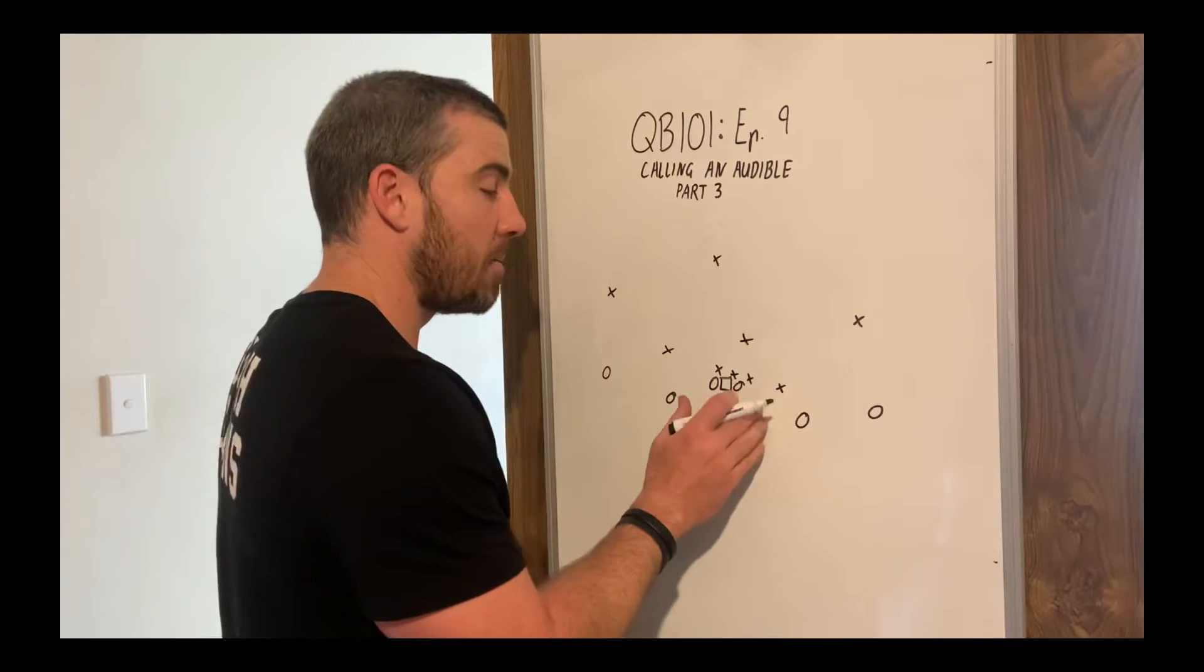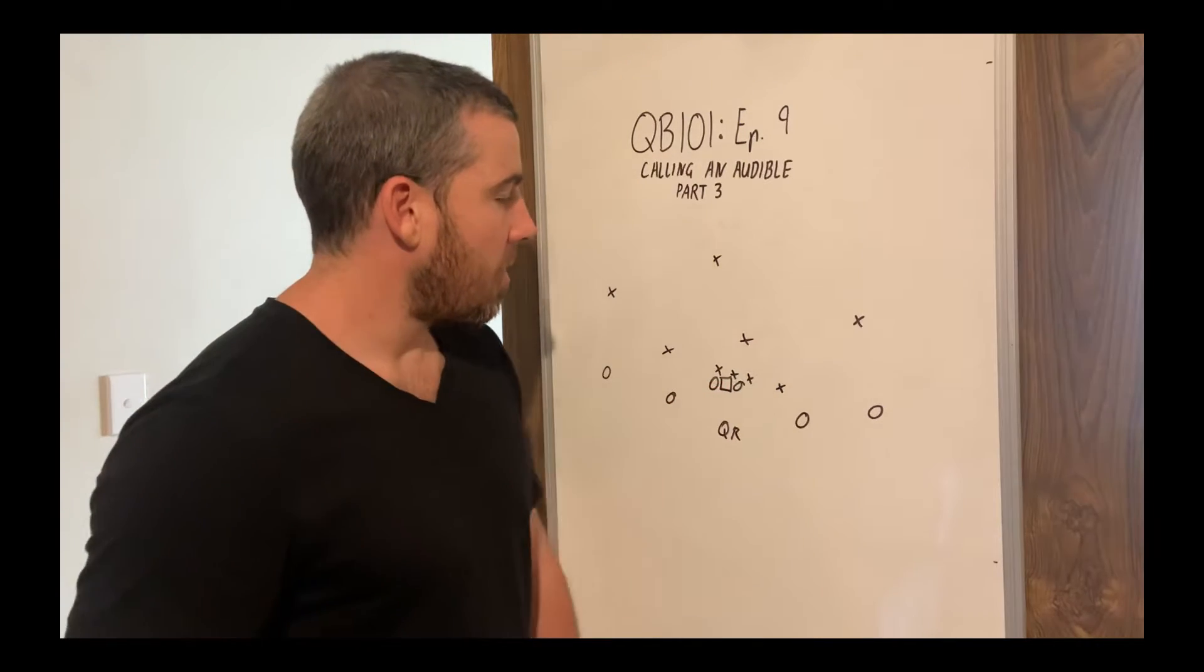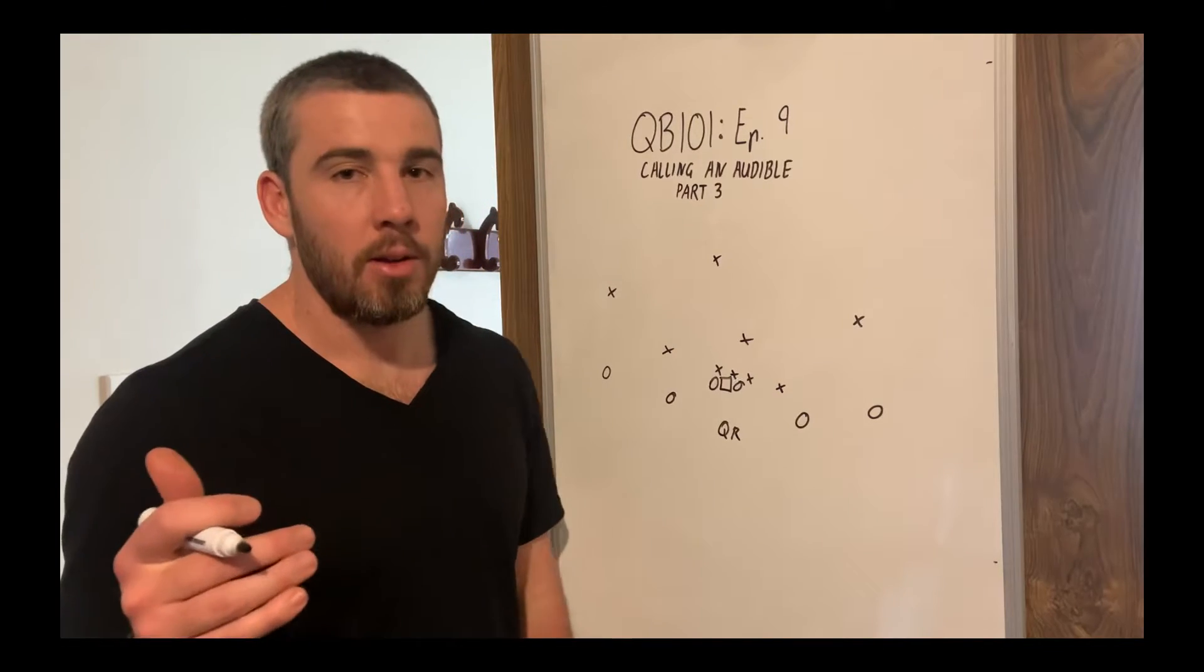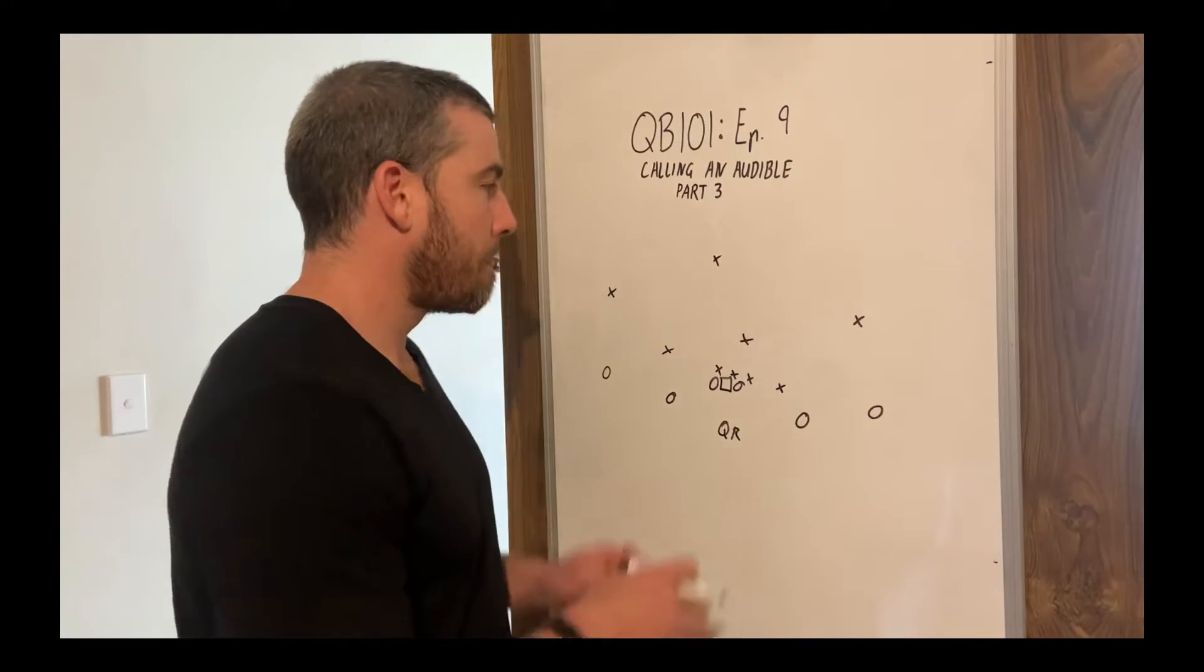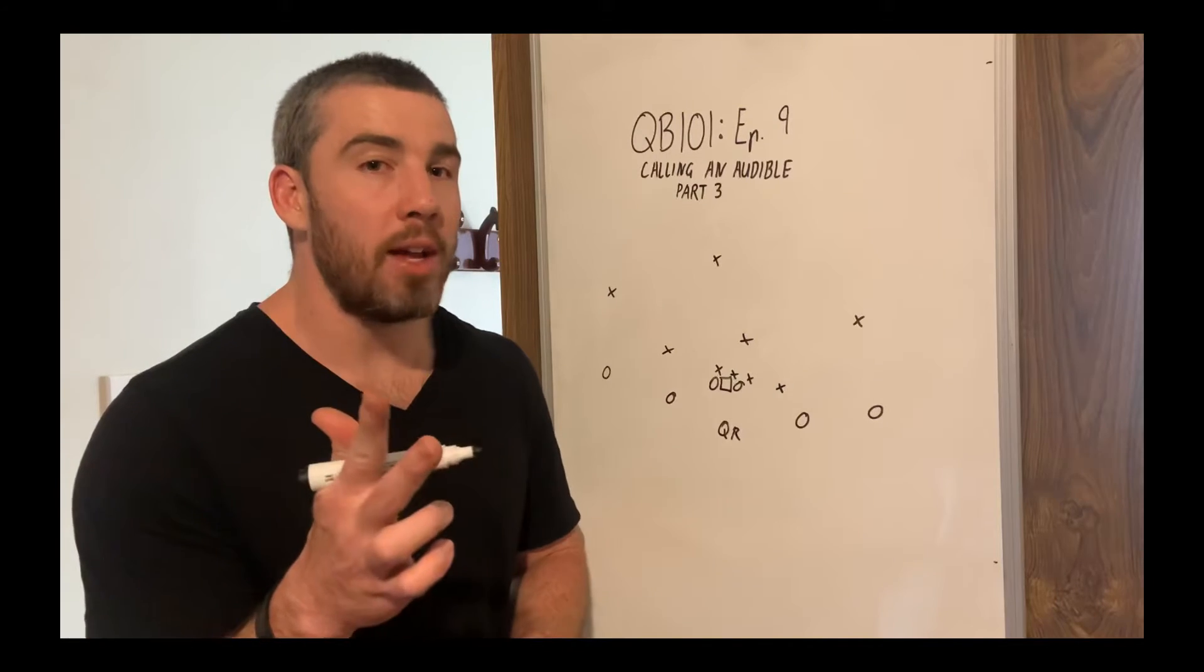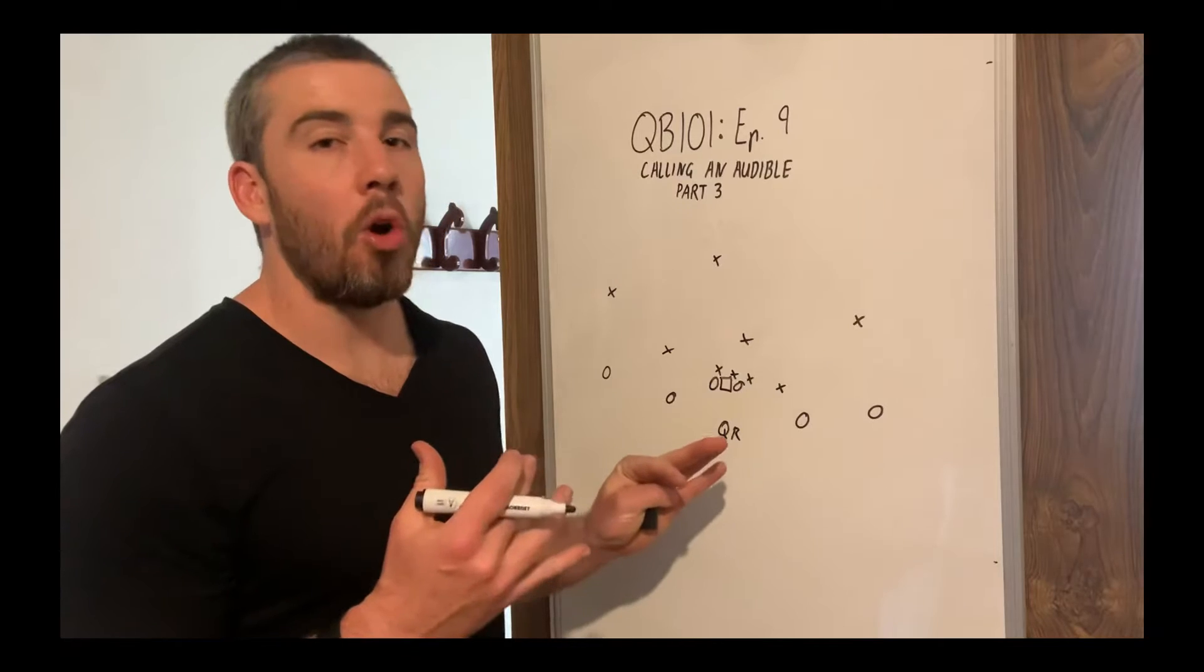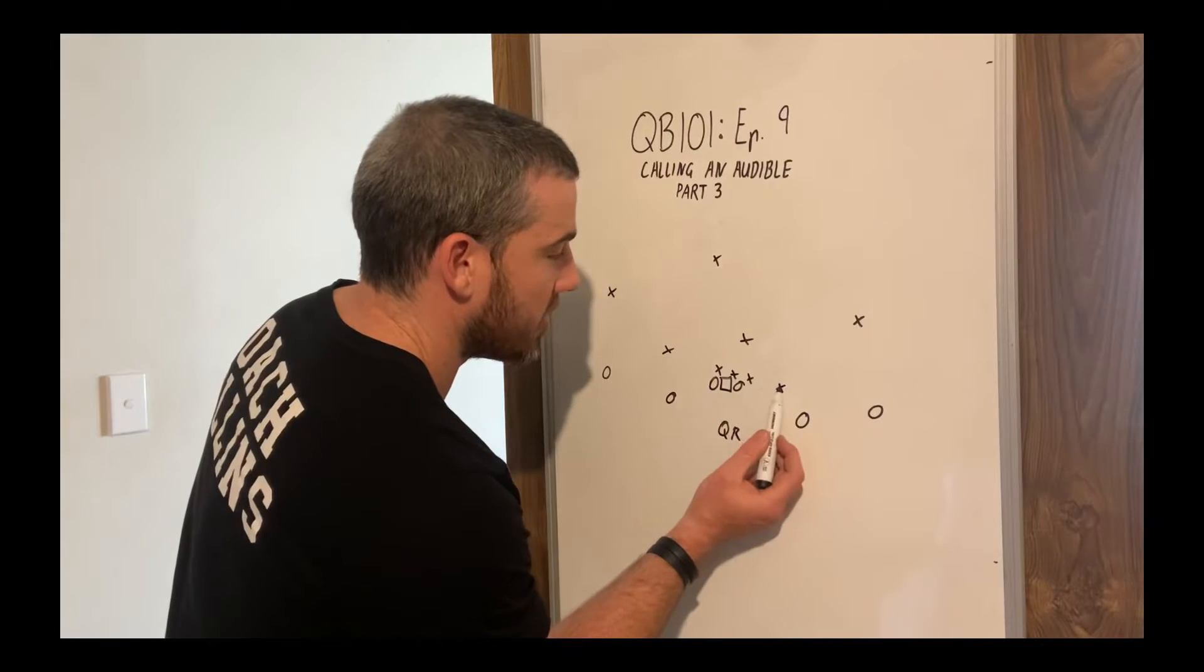Now it might just be them disguising and making it look like a blitz. But if you see blitz and you genuinely believe they're coming, we need to account for that. How we fix this, there's two ways you can do it. In the offense I run, we like to run toss away from the overload side.